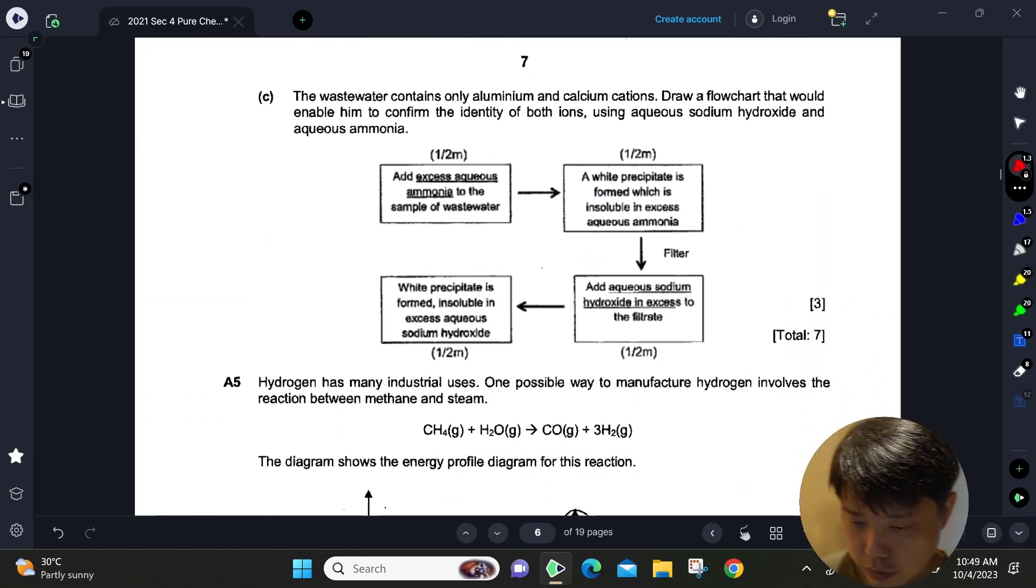Wastewater contains only aluminum and calcium cations. Draw a flowchart to confirm identity. The first test we're going to do is add aqueous ammonia because we are testing for Al³⁺. Then you form a white precipitate which is Al(OH)₃, insoluble in excess.